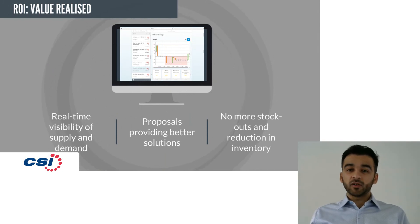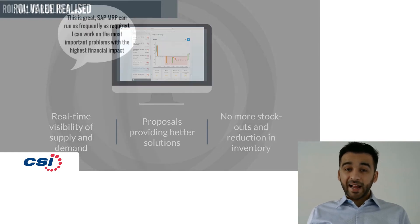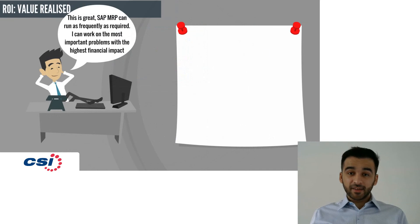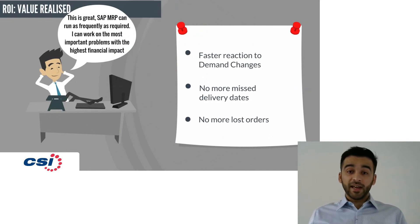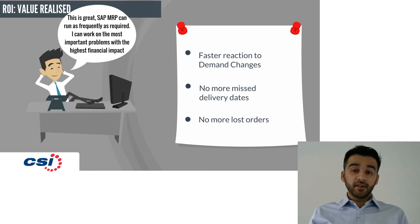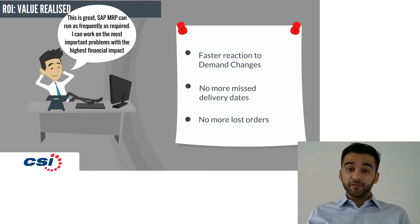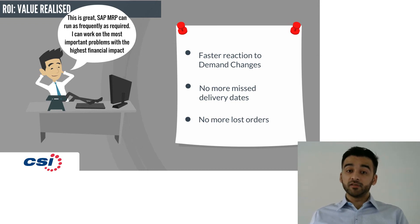He can identify and resolve issues much more quickly with no more stock-out situations. Re-planning is faster due to more frequent MRP runs and shorter cycles. Faster reaction to demand changes means that businesses can benefit from lower inventory and safety stock levels.